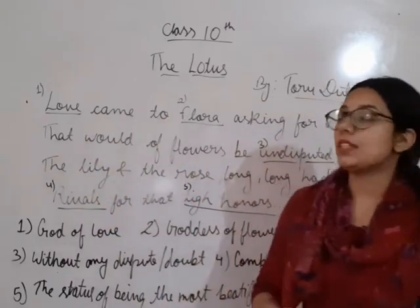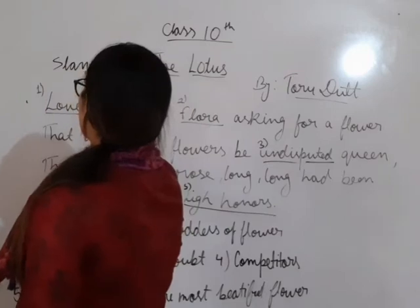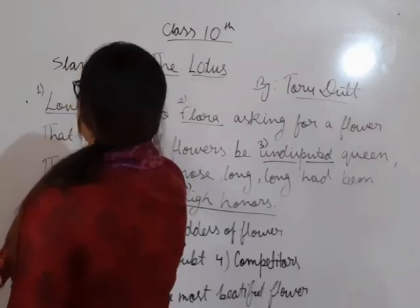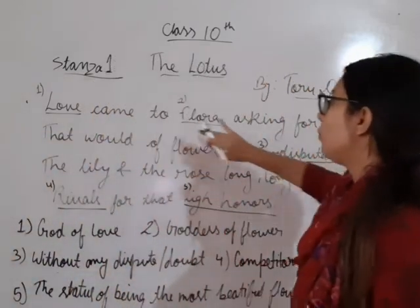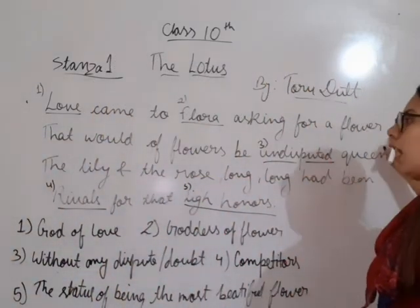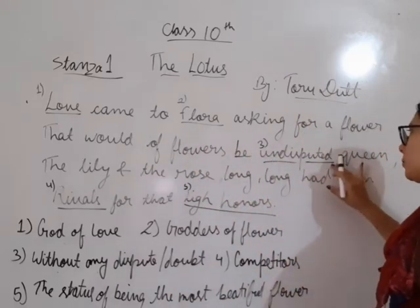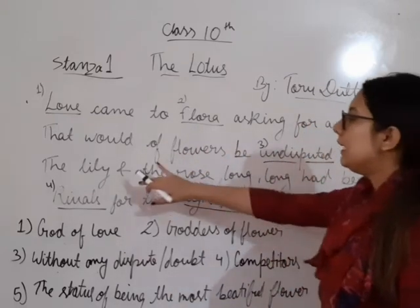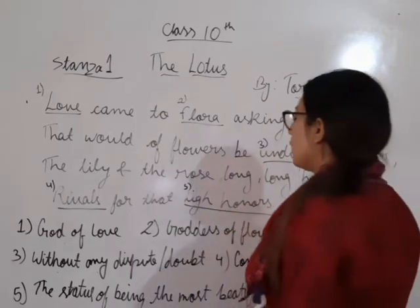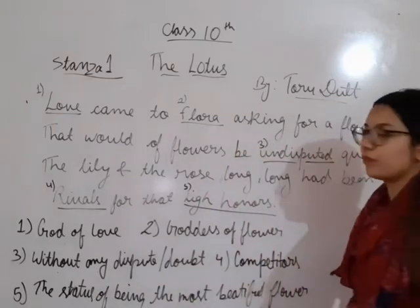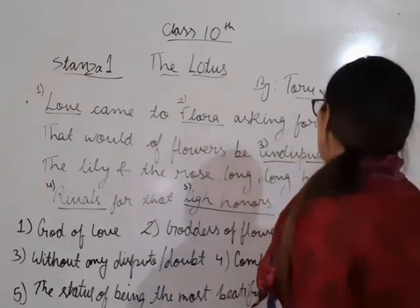Stanza one: 'Love came to Flora, asking for a flower that would of flowers be undisputed queen. The lily and the rose, long long had been, rivals for that high honour.'